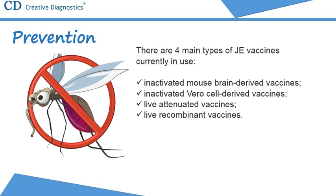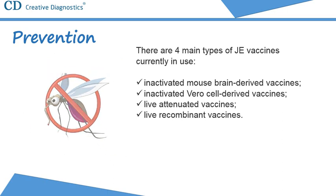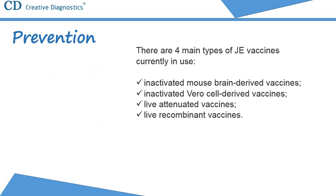Safe and effective Japanese encephalitis vaccines are available to prevent disease. There are four main types of Japanese encephalitis virus vaccines currently in use: inactivated mouse brain-derived vaccines, inactivated Vero cell-derived vaccines, live attenuated vaccines, and live recombinant vaccines. Over the past years, the live attenuated SA14-14-2 vaccine manufactured in China has become the most widely used vaccine in endemic countries, and it was pre-qualified by WHO in October 2013.